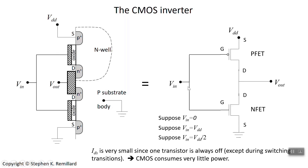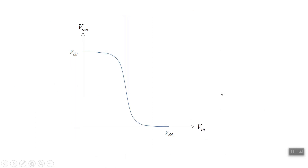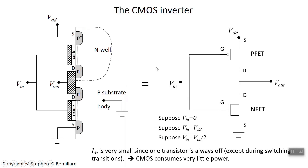Having both FETs on at the same time is not useful for an inverter — the output ends up at roughly half V_DD, not a clean high or low. It's worth plotting output voltage versus input voltage: when input is zero, output is V_DD; when input is V_DD, output is zero; in between, there is an intermediate region where both FETs are on that you must avoid. This circuit is only good for two states — input equals zero or input equals V_DD — making it a digital circuit with only high or low.